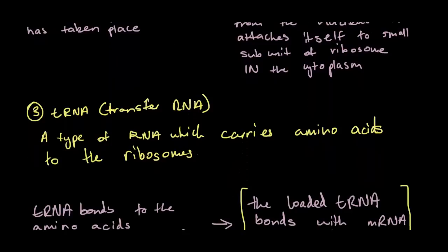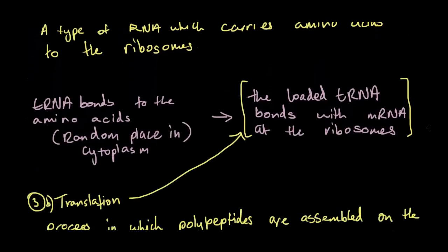So we have the tRNA, and as I said before, tRNA stands for transfer RNA. Now, the difference between mRNA and tRNA is that tRNA actually just is in a random location in the cytoplasm, and it's a type of RNA which carries amino acids to the ribosomes. So here's a little flow diagram. So tRNA bonds to the amino acids in the cytoplasm, random place, and from there, the loaded tRNA bonds with the mRNA at the ribosomes.